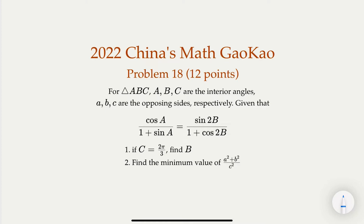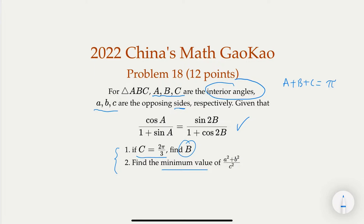Let's look at problem 18 of the math college entrance exam. Triangle ABC has interior angles A, B, C, so A plus B plus C equals 180 degrees, and lowercase a, b, c are the corresponding side lengths. There are two parts: one, if C is given as 2π/3 (120 degrees), find angle B; and two, find the minimum value of (a² + b²) / c².